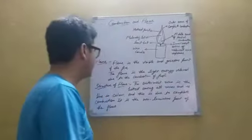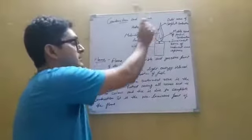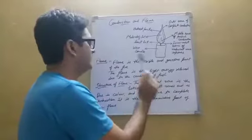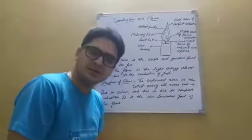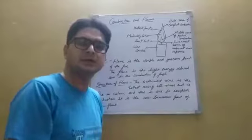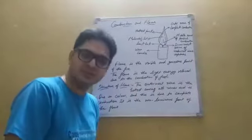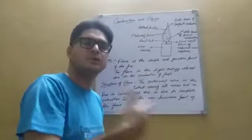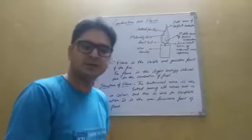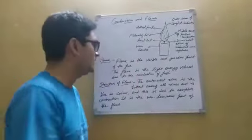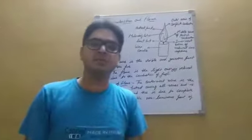The flame is the light energy released due to the combustion of fuel. This light energy converts to heat energy and helps in the combustion of the fuel - the thing we are burning. In this structure we can see what happens when we burn something.